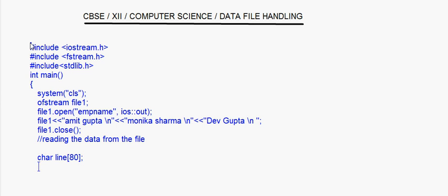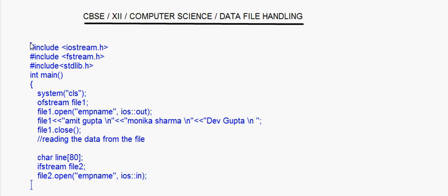After that I need to have an input stream, that is ifstream. I call it file2. Now this file2 object has to be associated with the file, so file2.open — you will give the same file name that you had given, that is emp name — and ios input mode. So this file is opened in the input mode.